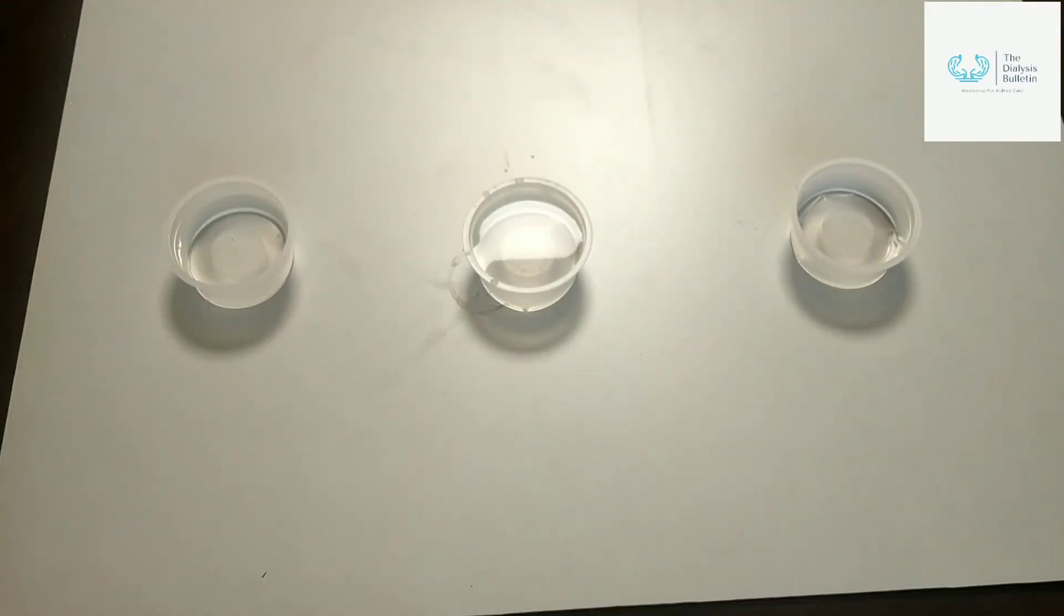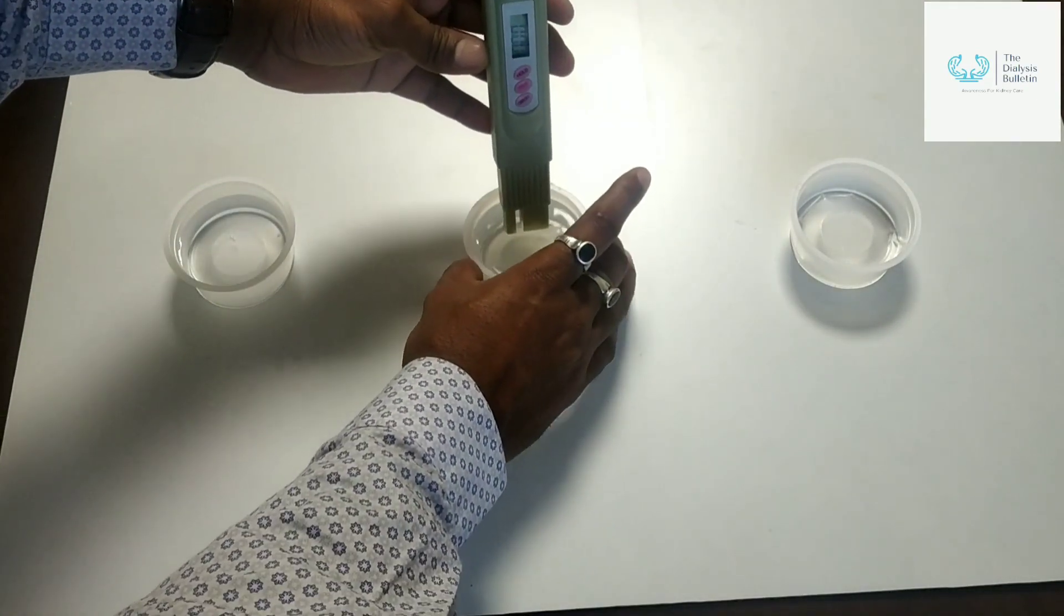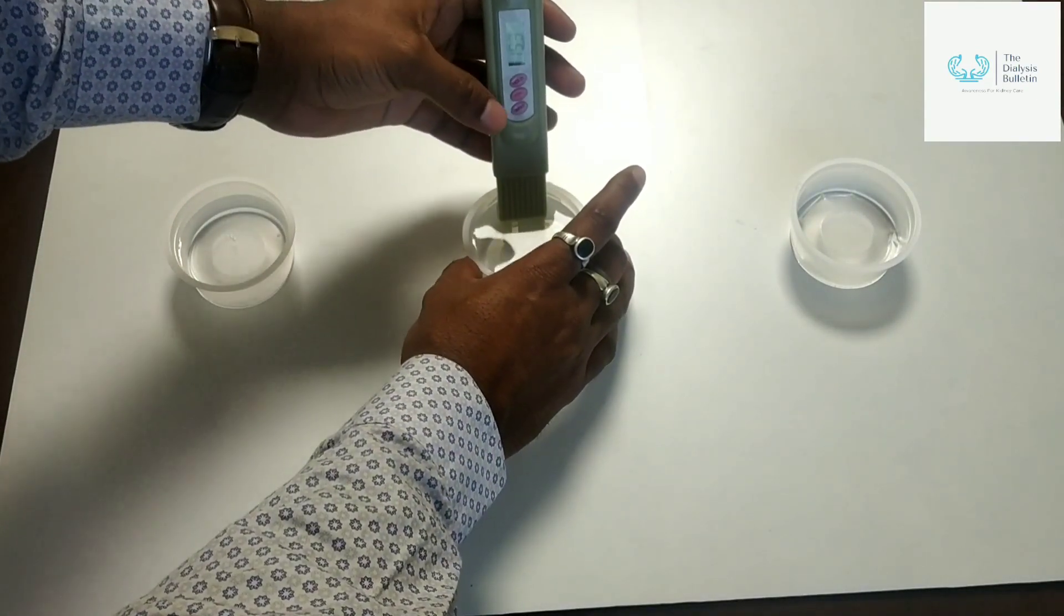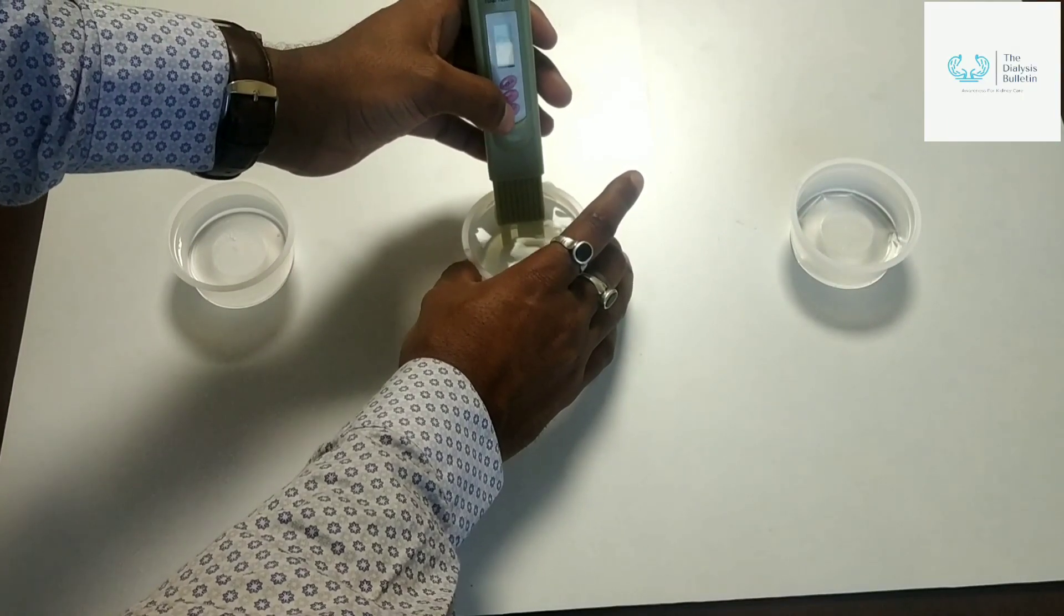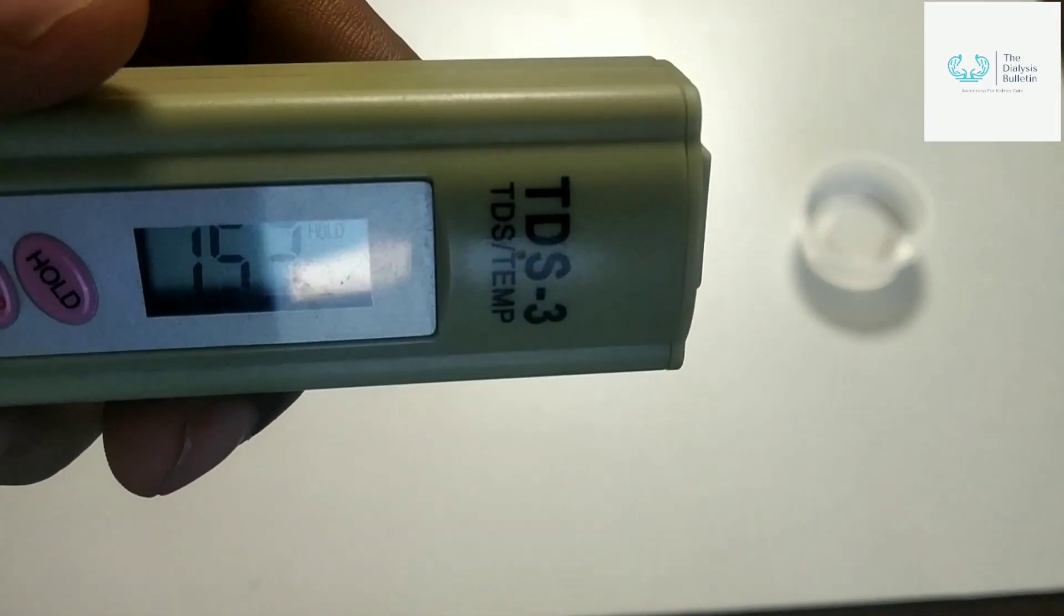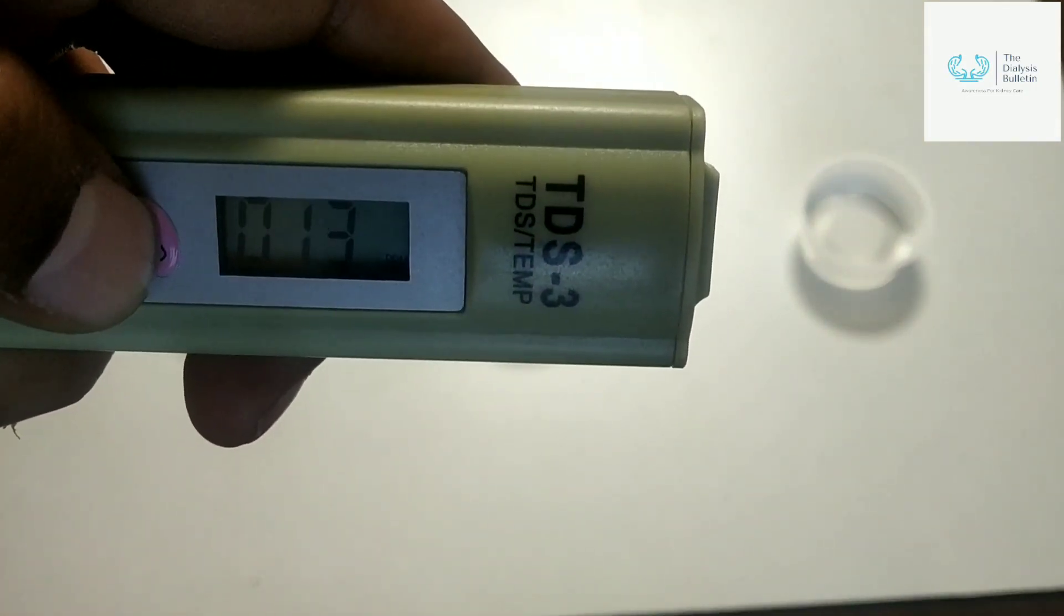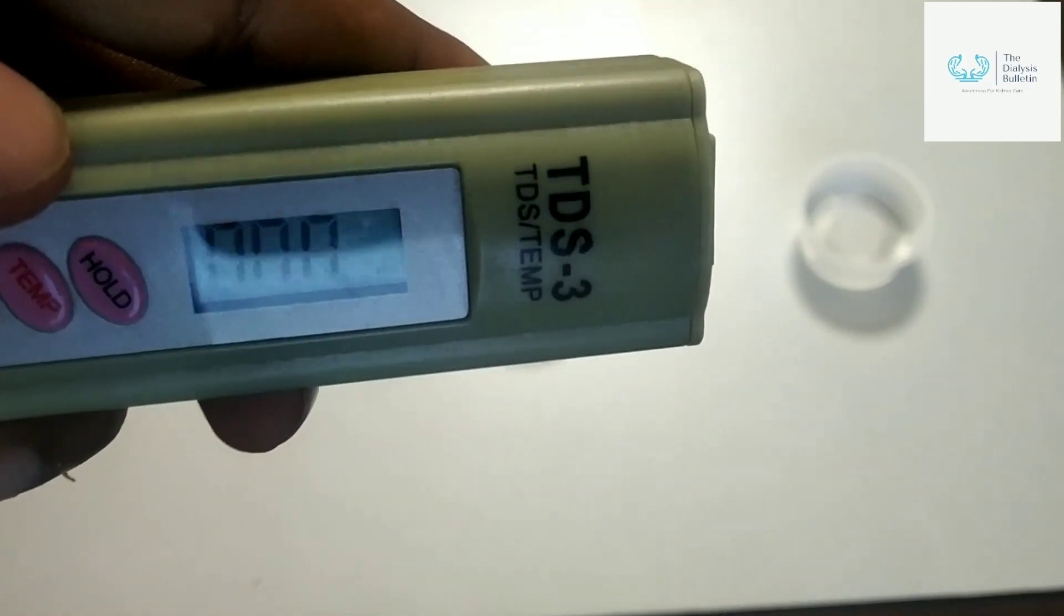Now we will check the post-softener water, which is here. The post-softener water is 153 PPM. Now I am going to unhold. It's now again at zero.